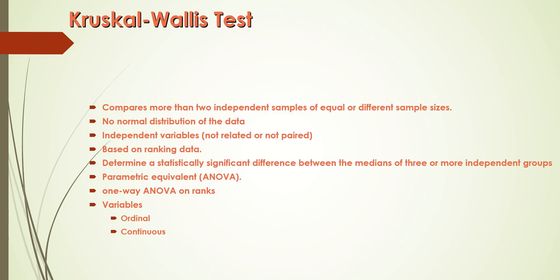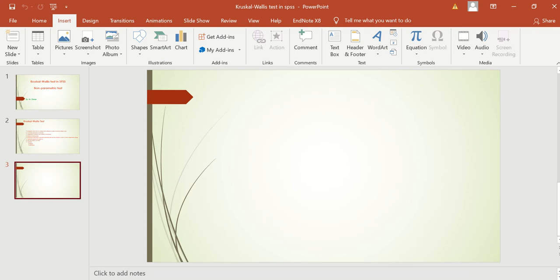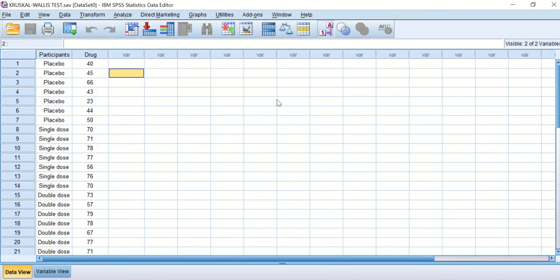The variables within each group can either be ordinal — where a number is given from one to five, where one means unsatisfied and five means mostly satisfied or agreed — or the variable can be continuous, like weight or height, but the data in that continuous variable is not normally distributed.